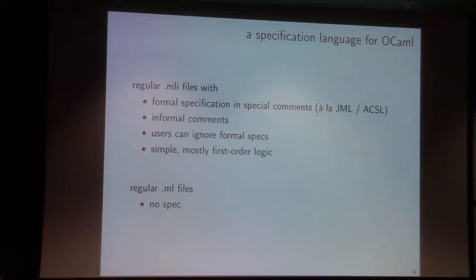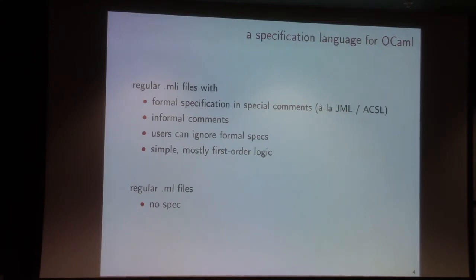We want to keep writing informal comments in normal English inside these interface files, so that users can ignore the specification to understand what the functions are doing. Because it's just another library, and some of our users are not going to be proof experts — they can safely ignore the specification and still understand the behavior.